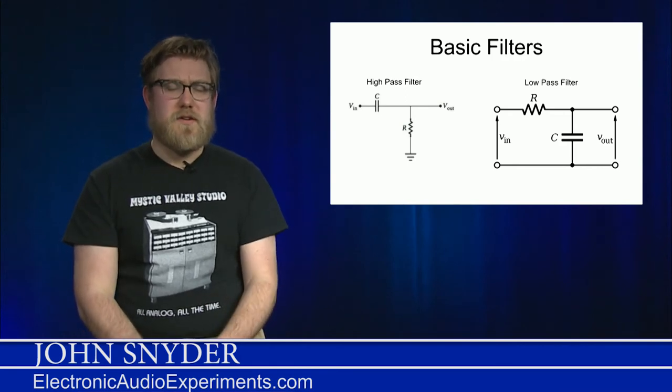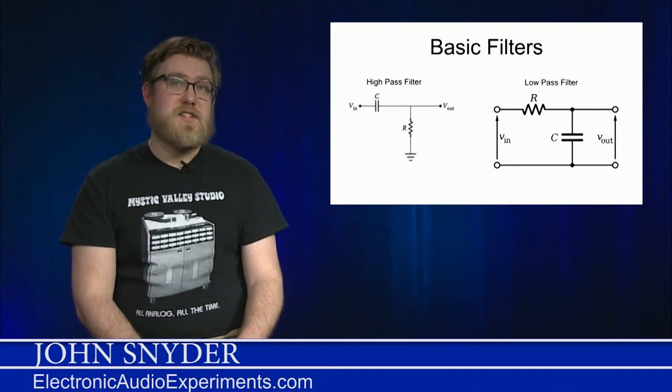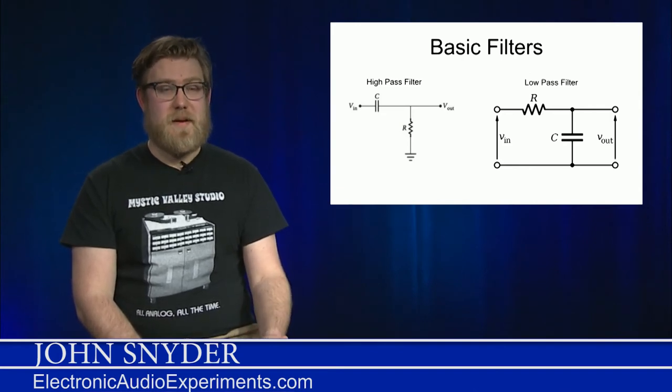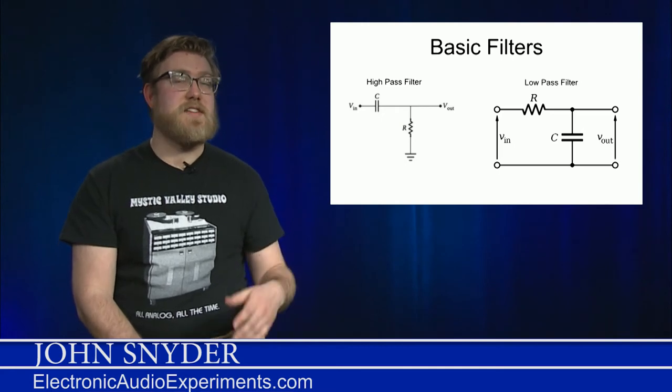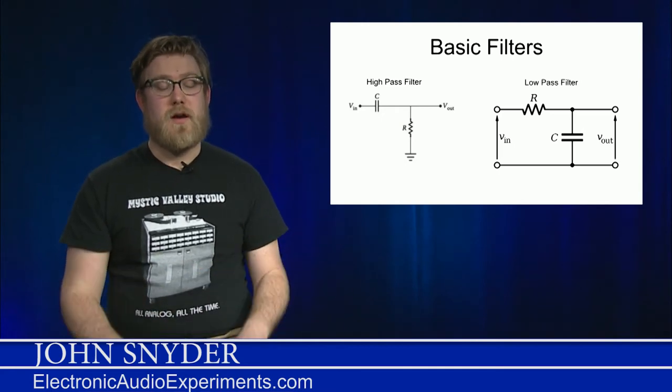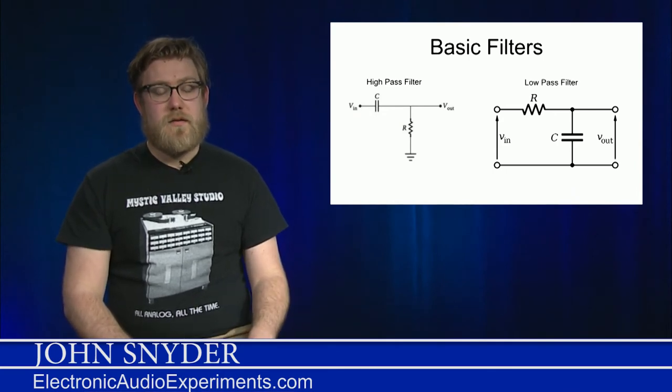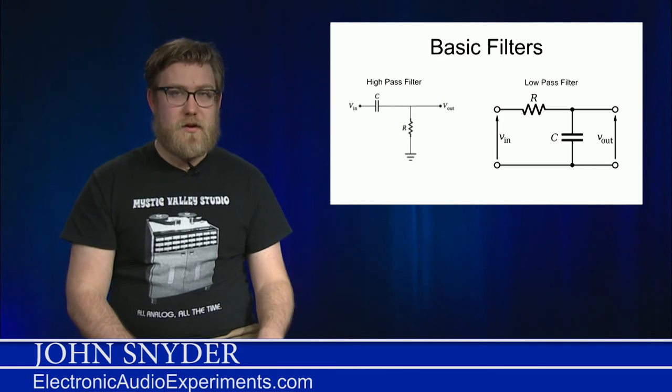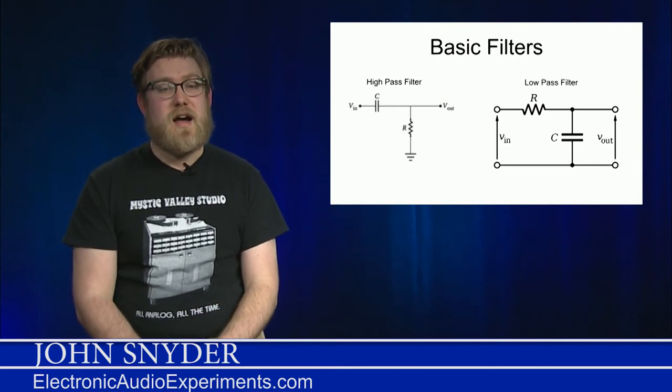Here I have two different kinds of filters, a high-pass filter and a low-pass filter. Both of these can be made from a single resistor and capacitor. The high-pass filter does exactly what it says. It lets high frequencies pass through, and those frequencies are going to be determined by the value of the resistor and the capacitor. Similarly, we have a low-pass filter, which is going to let low frequencies through and cut high frequencies.